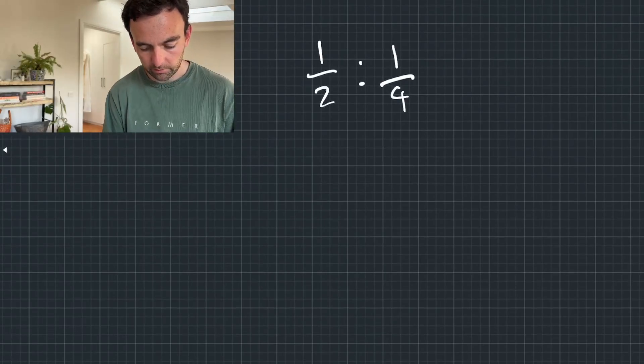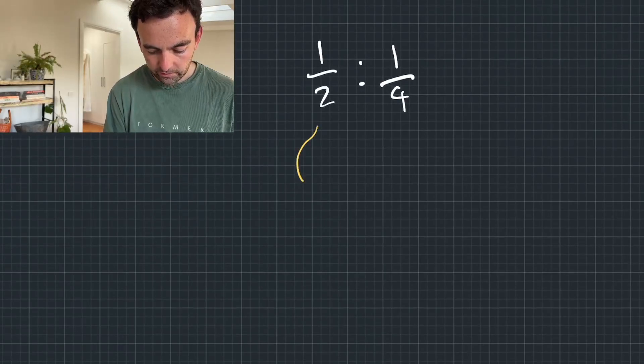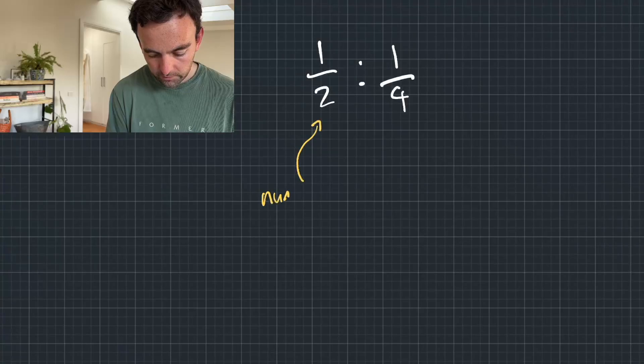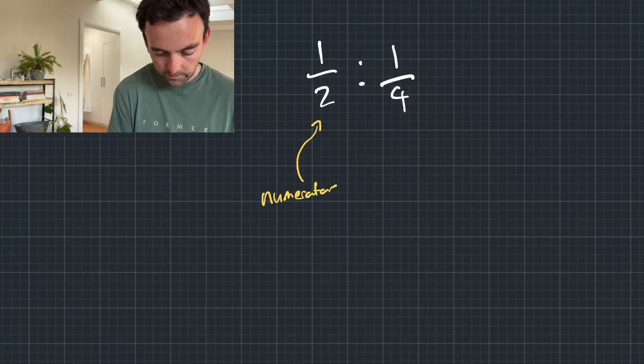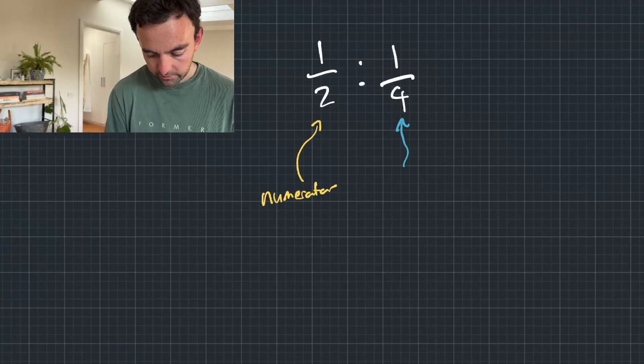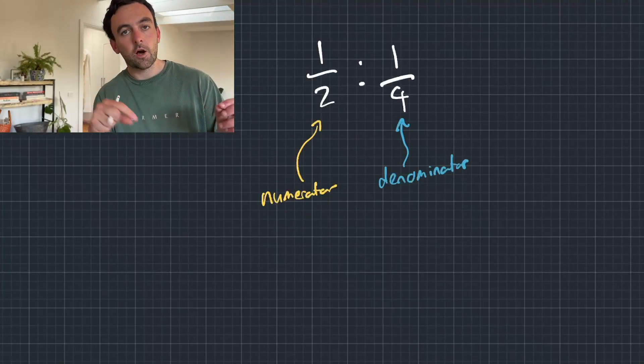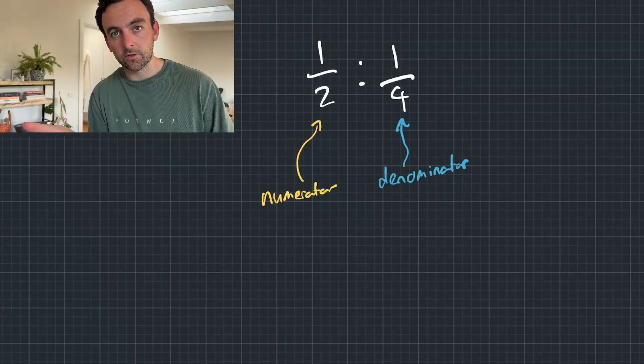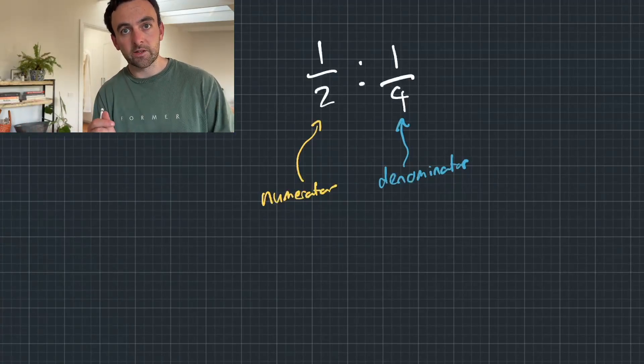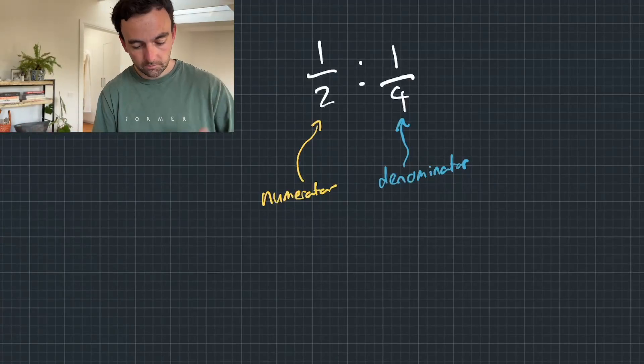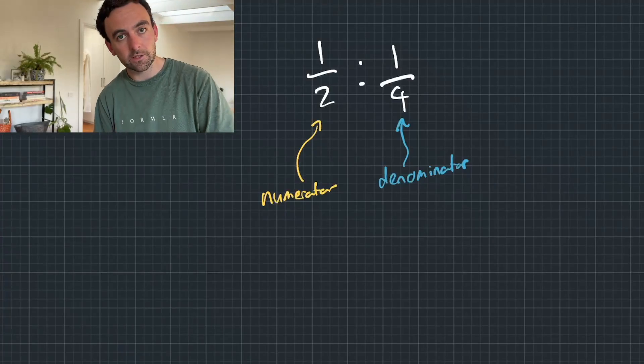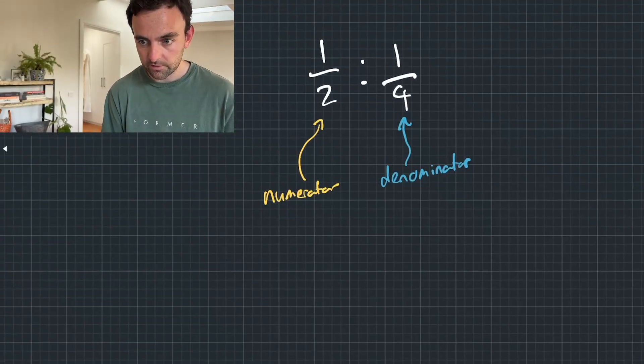My process for going through ratio questions is just make whatever's on the left the numerator, whatever's on the right the denominator in a fraction, and whatever whole number this comes out to, that will be your answer of A or the thing on the left in comparison to B. So let's give this a little example.